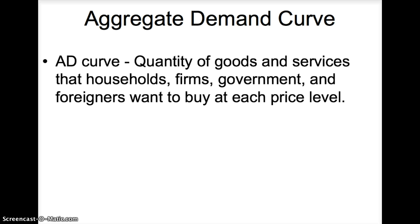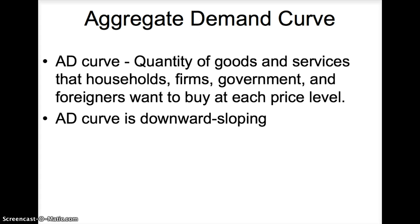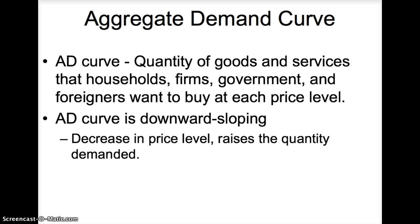The aggregate demand curve shows the quantity of goods and services that households, firms, government, and foreigners want to buy at each price level. The aggregate demand curve is downward sloping — as prices decrease, the quantity demanded will rise.